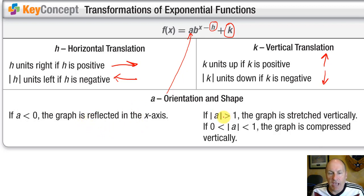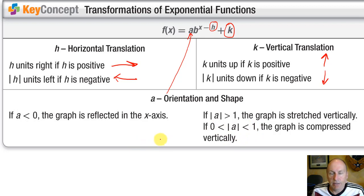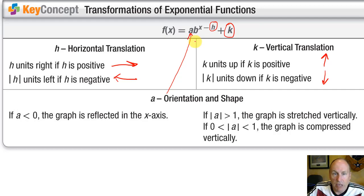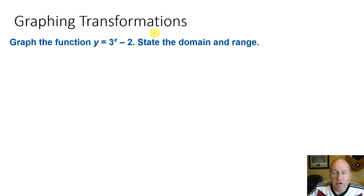The number before the exponential part — the 'a' term — is responsible for stretching the graph. If a is greater than 1, it stretches the graph vertically. If a is between 0 and 1, it compresses it. The bigger that number is, the more vertically stretched it will be; if it's a small number between 0 and 1, it compresses it. This is all consistent with how we've handled other types of functions, so it's not really memorizing new things.